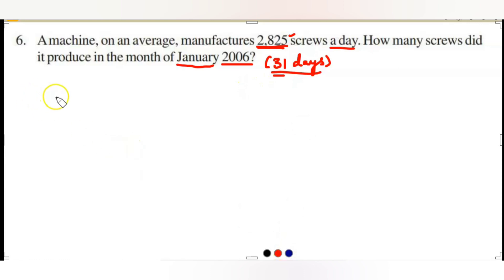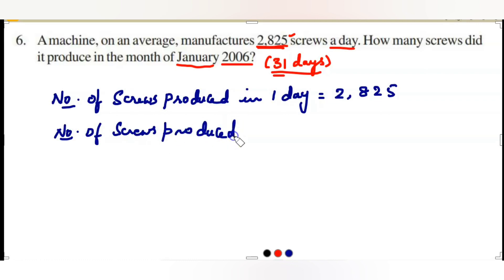He is asking about January 2006 which is asking about 31 days. So 31 times 2,825. That means 2,825 should be multiplied by 31. Let us write the statements. Number of screws produced in one day: 2,825. Number of screws produced in January, 31 days, which is 2,825 times 31. Let us multiply and check the answer, 2,825 multiply with 31.